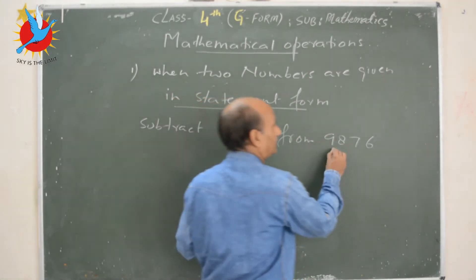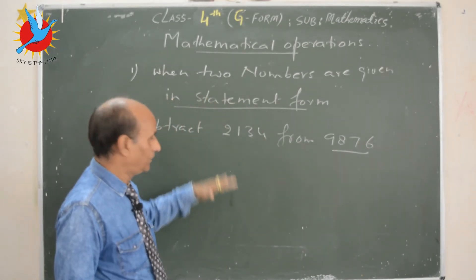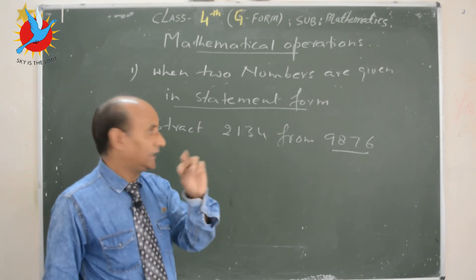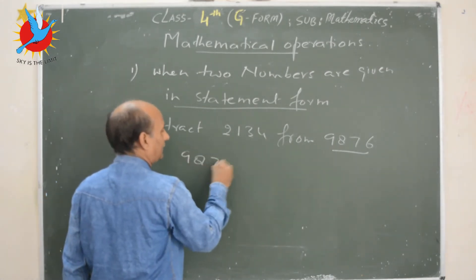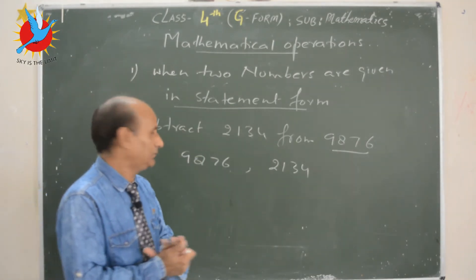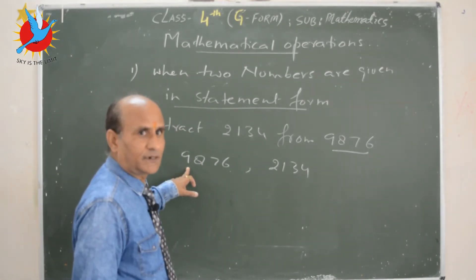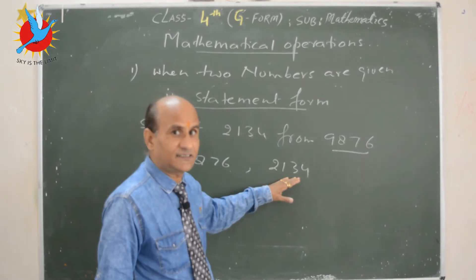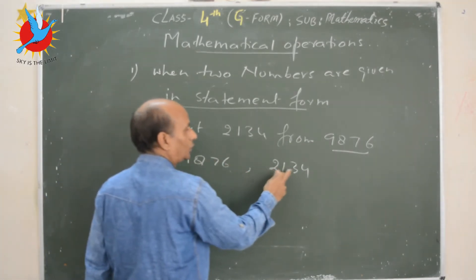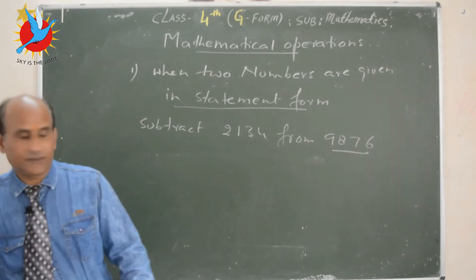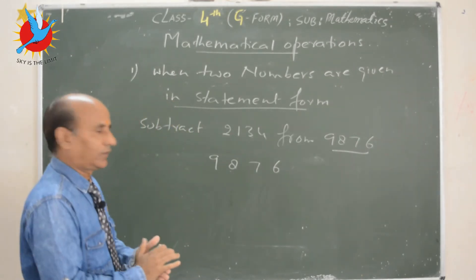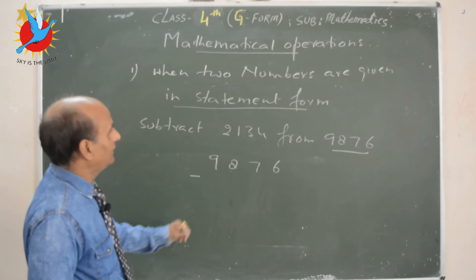Now apply the same rule: count the number of digits of both numbers. Here you have 9 8 7 6 and 2 1 3 4. Count: both have 4 digits. If digits are the same, start writing from the left. So write the number after 'from' first: 9 8 7 6, then write 2 1 3 4 below it and subtract. 6 minus 4 is 2, 7 minus 3 is 4, 8 minus 1 is 7, 9 minus 2 is 7.